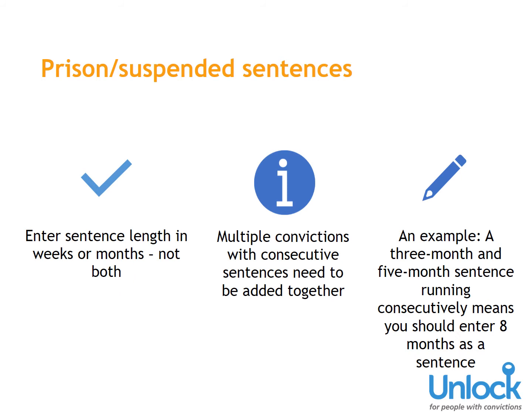Prison or Suspended Sentences: When entering prison sentences or suspended sentences, you'll be asked for the length of the sentence in months or weeks. Make sure you enter one or the other, but not both. If you've received multiple convictions with consecutive prison sentences, you'll need to add together the length of the prison sentence for every conviction. For example, if you were sentenced to three months and five months to run consecutively, you should enter eight months as the sentence.